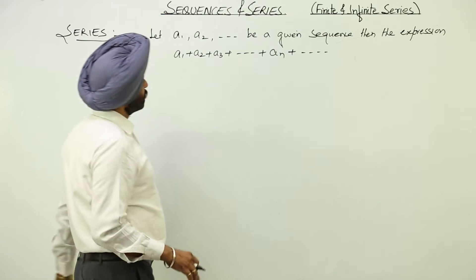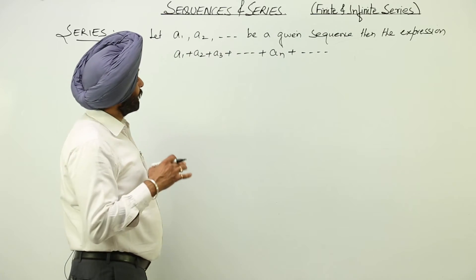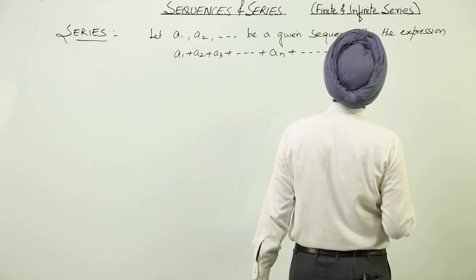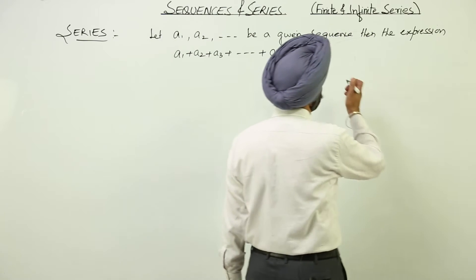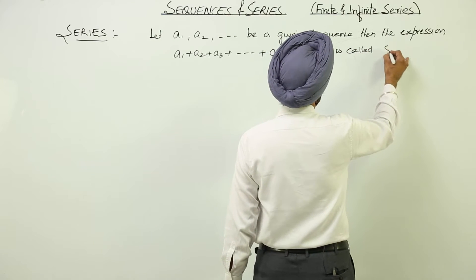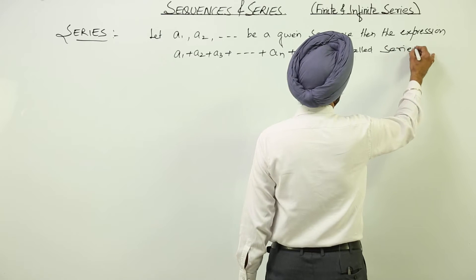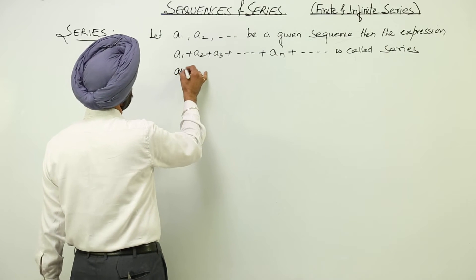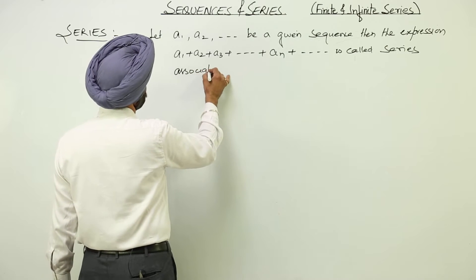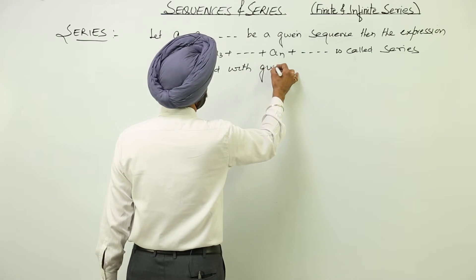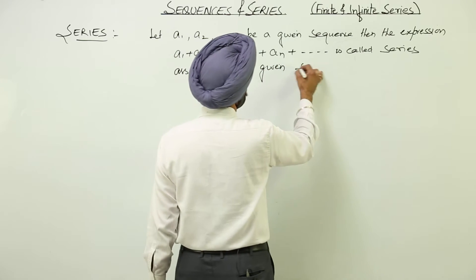So, let A1, A2 be a given sequence, then the expression A1 plus A2 plus A3 till infinite or n terms is called a series associated with the given sequence.